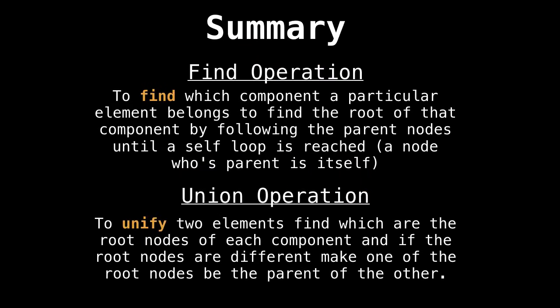To summarize, if we want to find out which component a particular element maps to, what we have to do is find the root of that component by following all the parent nodes until we reach a self loop or a node whose parent is itself. And that will uniquely determine which component that element belongs to.